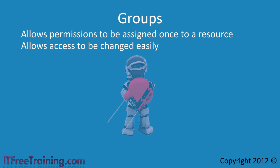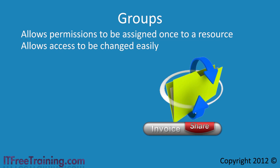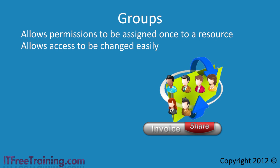Consider if you created a file share called invoice. Without groups you would need to assign the users directly to the share. With only a few users it is not that hard to manage, but once you add a few more users it starts to get more complex. At present, each time you want to give a new user access you need to modify the permissions on the server. This requires the administrator making the change to know the name of the share and the server on which it is located.